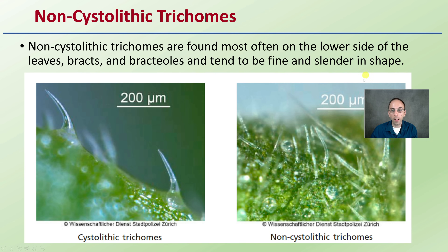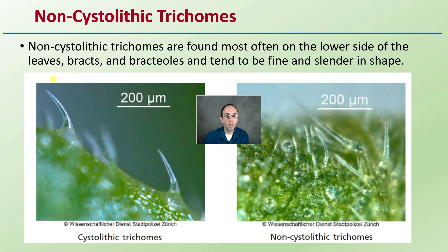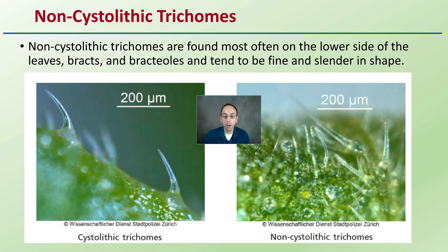Then we have the non-cystolith trichomes, found most often on the lower side of the leaves, bracts, and bractioles, and tend to be fine and slender in shape. There's no bulb at the bottom — they just look like a little clear hair protruding from the leaf surface. These are all epidermal protrusions.